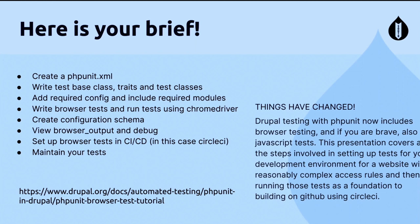In order to create these tests, the following are required — and to some extent this is a revision of what Michael spoke about. We create our PHPUnit config, write a test base class with traits and test classes, add required config, and include required modules. Then we write browser tests and run them using ChromeDriver. We also need to create configuration schema, view browser output as we debug, set up browser tests in our CI/CD, and maintain our tests.